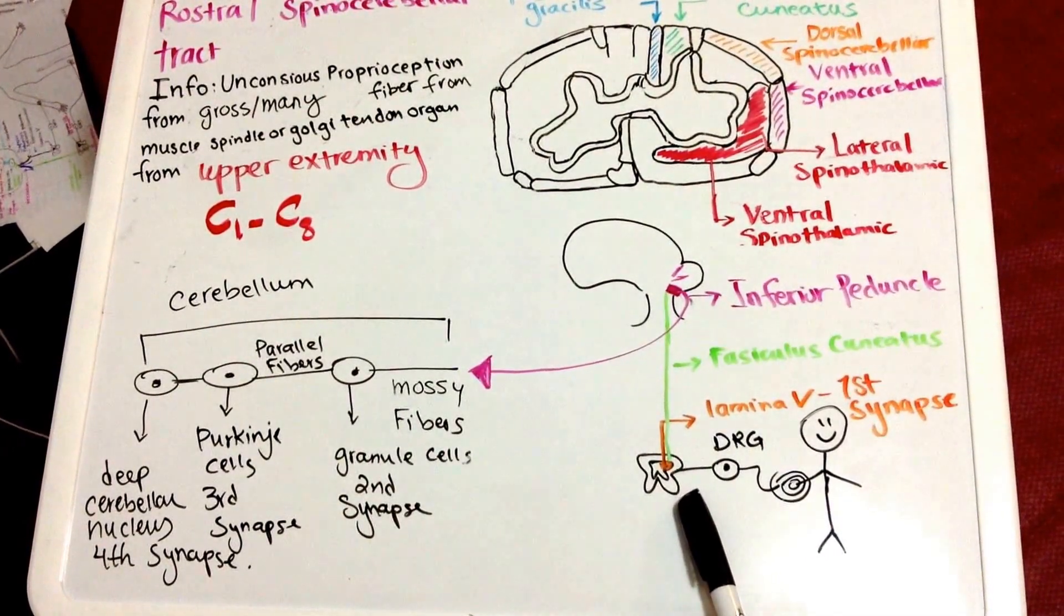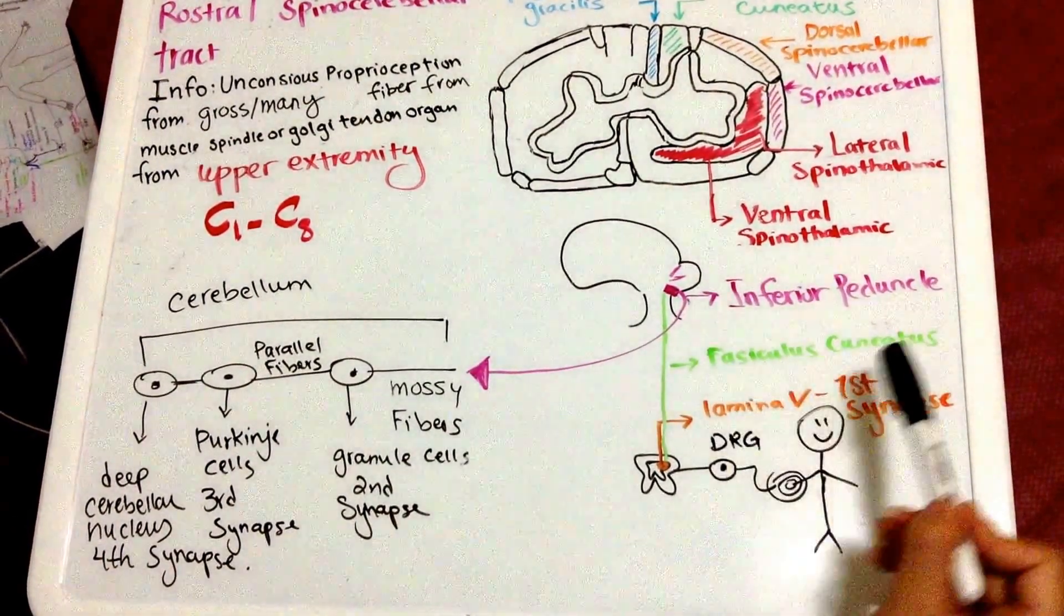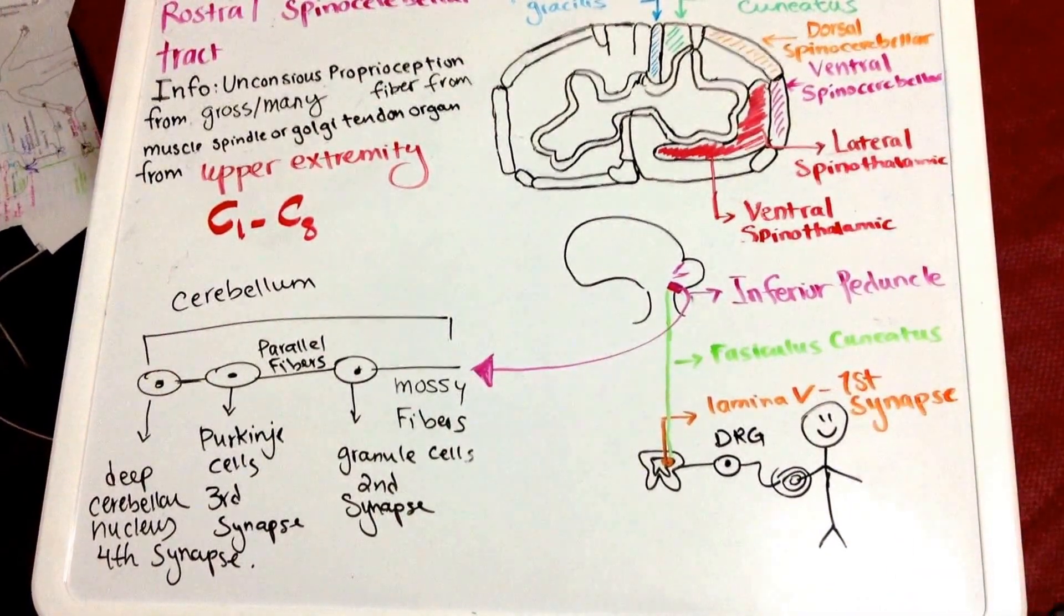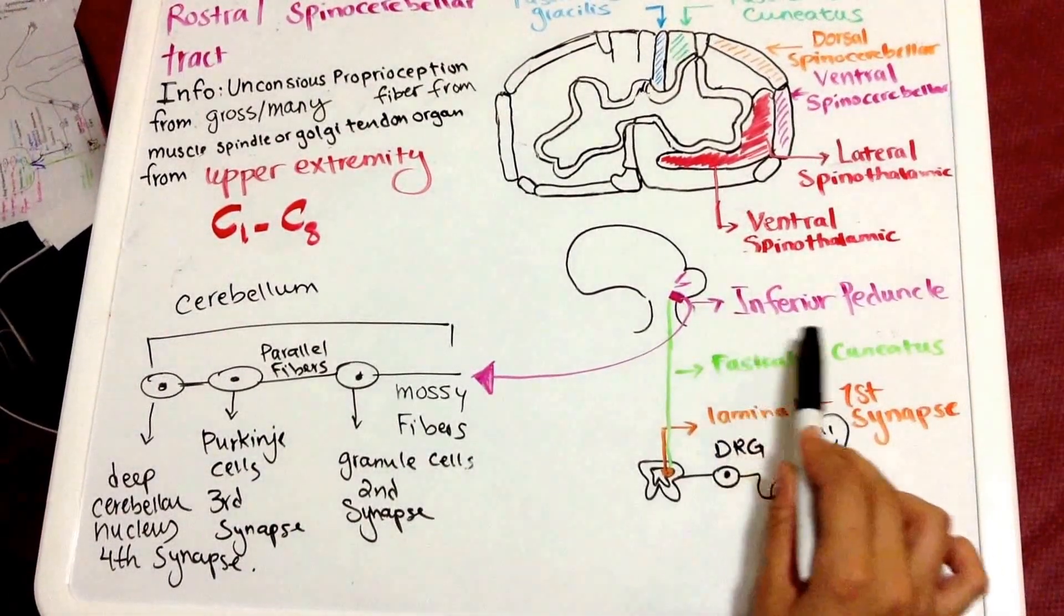Then the information will go up via the fasciculus cuneatus. This is the same tract we saw in dorsal column for upper extremity and the information is going to enter the cerebellum via inferior peduncles.